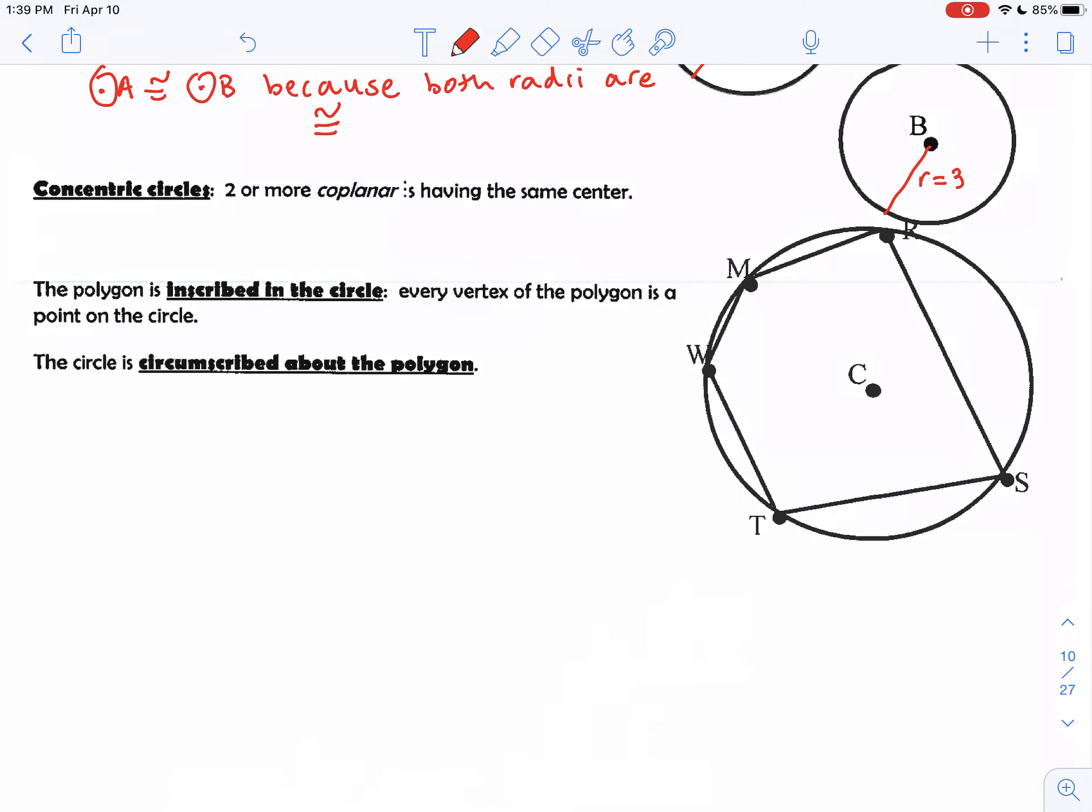Concentric circles are circles that share the same center. If you want to think of it as a bullseye. So here's the center, you have one circle with that as the center, then you have another circle with that as the center. So these are what we call concentric circles. They share the same center.